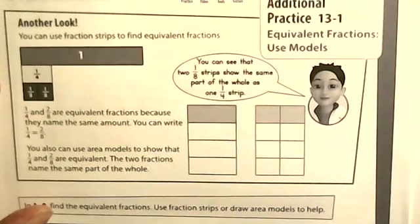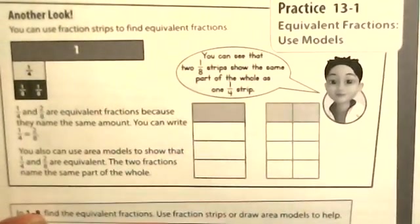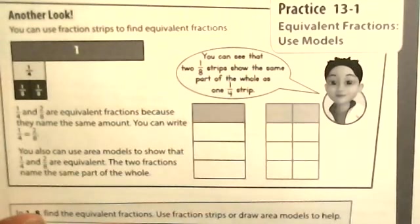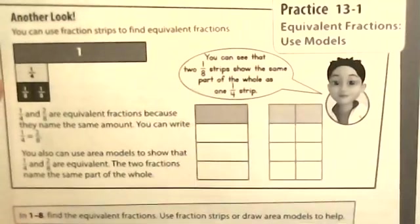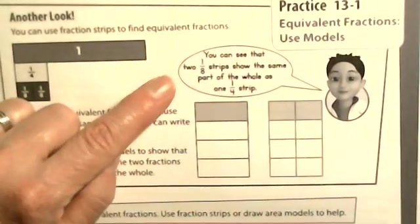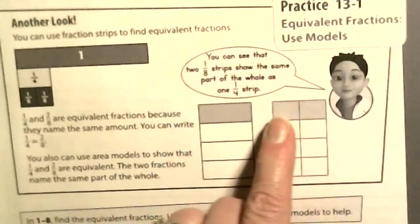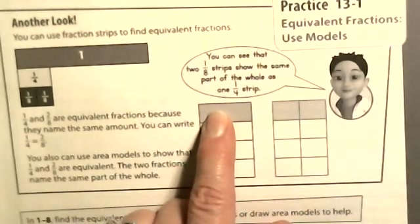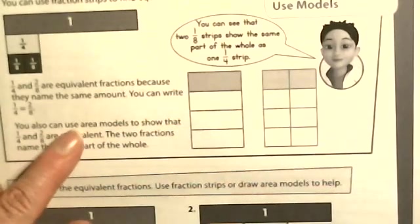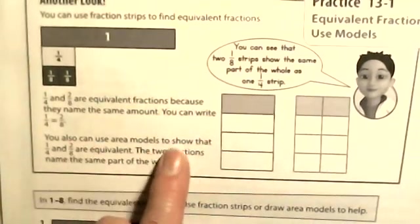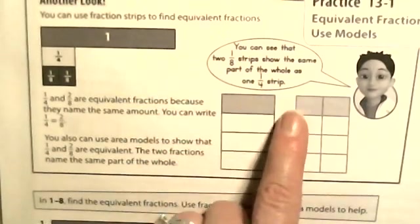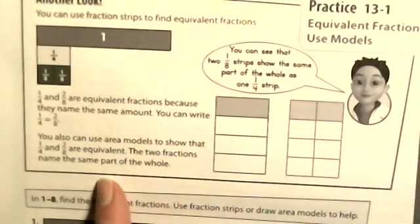You can see that two one-eighths strips show the same part of the whole as one one-fourth strip. You can also use area models — these are fraction strips, just a vocabulary review. You can use area models to show that one-fourth and two-eighths are equivalent. The two fractions name the same part of the whole.